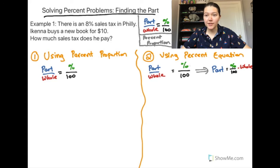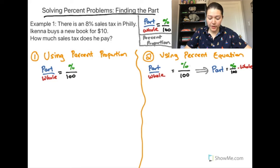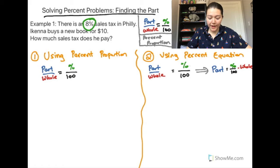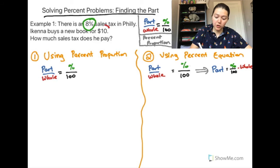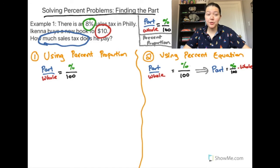For example one, there's an 8% sales tax in Philadelphia. Akena buys a new book for $10. How much sales tax does he pay? So if he's buying a book for $10, that's the subtotal — the cost of the book itself — but then you have to add sales tax, and we're trying to figure out how much sales tax he's going to pay in addition to the $10. For all of these, we need to identify the part, the whole, and the percent, then find the missing one. The percent is 8%, the whole is $10, and we're solving for the part — how much sales tax he actually pays, which is 8% of the whole.